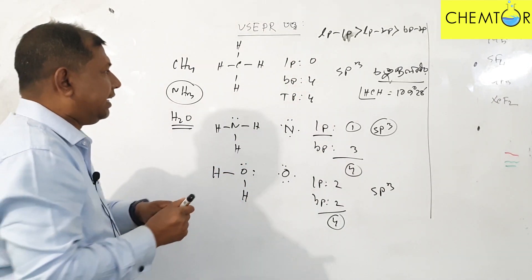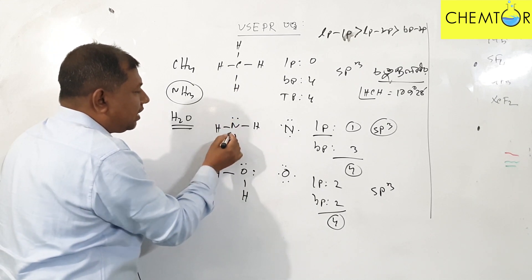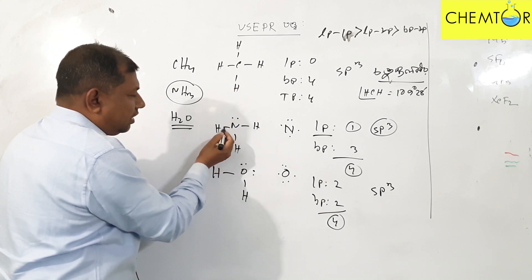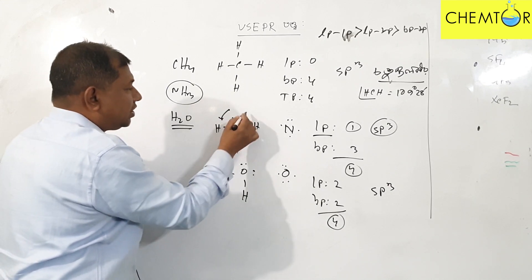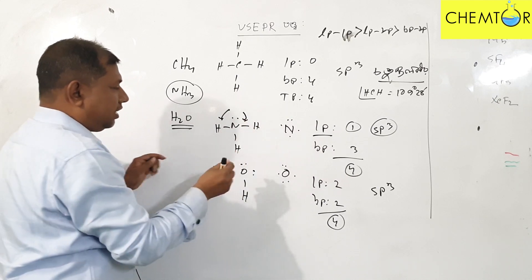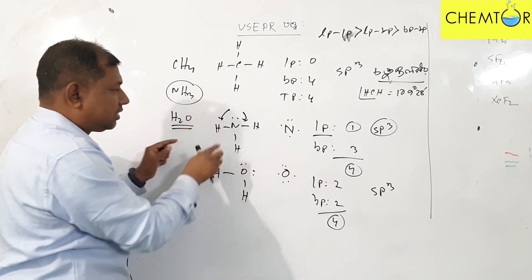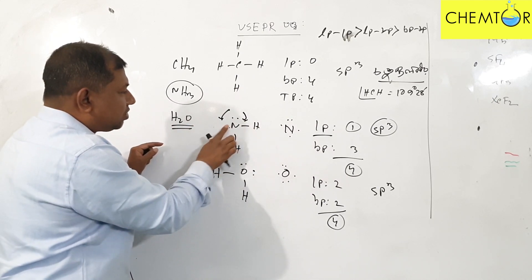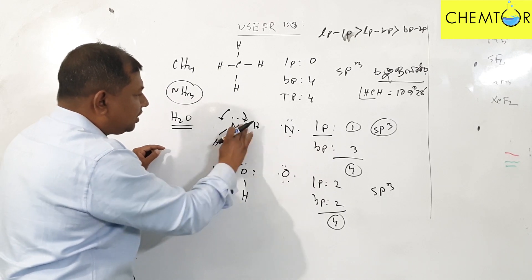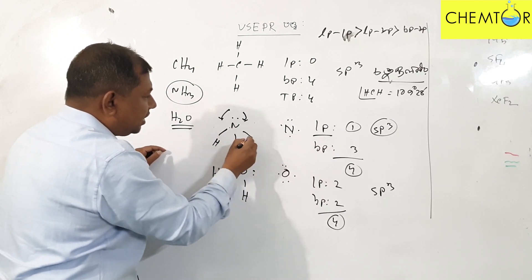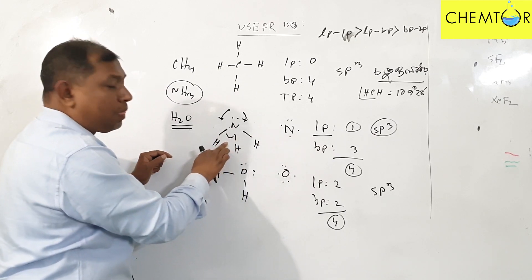As we can see, the nitrogen has a bond pair of electrons which will strongly repel. So this bond is the same. As a result, the geometrical shape is reduced and the angle is reduced.